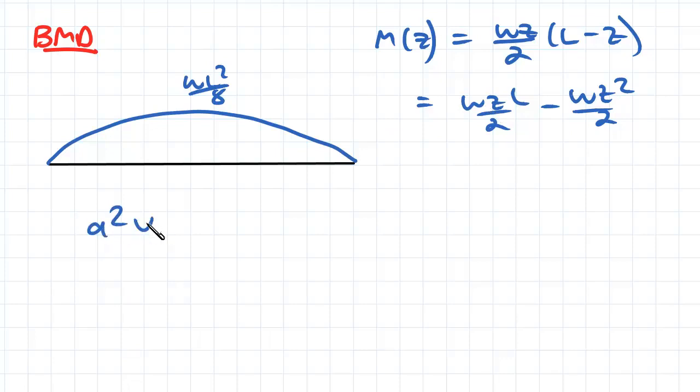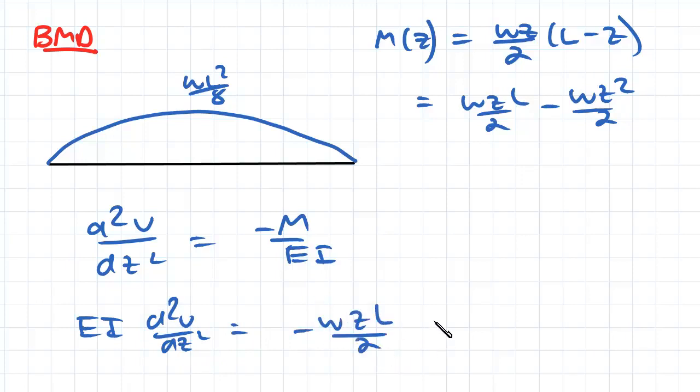So from the last video, we found out that d²V/dz² is equal to negative M over EI. So what we have here is an equation for M, which we can therefore substitute in. So EI d²V/dz² is going to be equal to negative WZL over 2 plus WZ squared over 2.